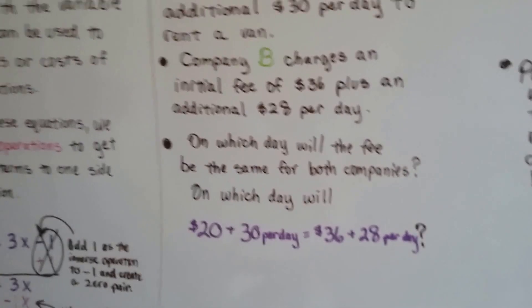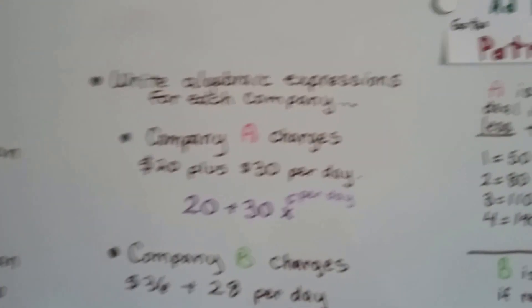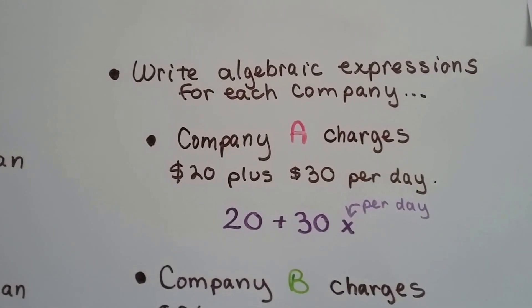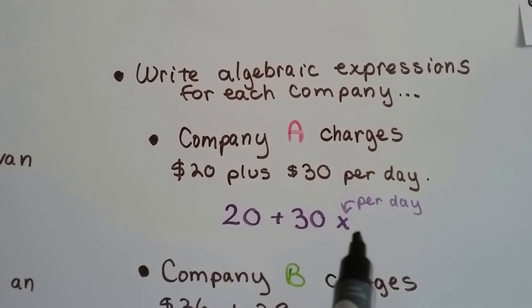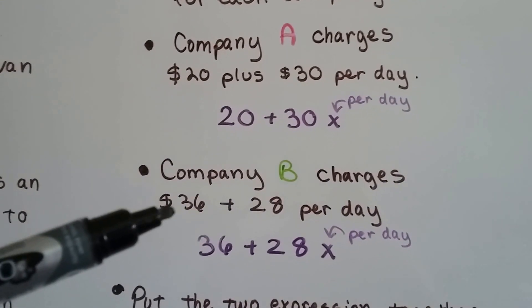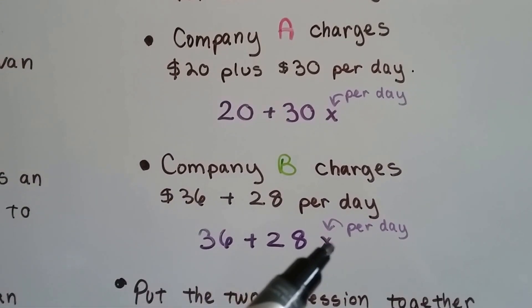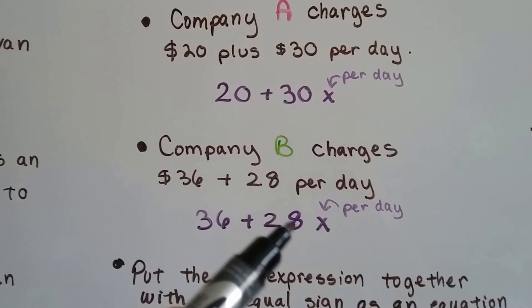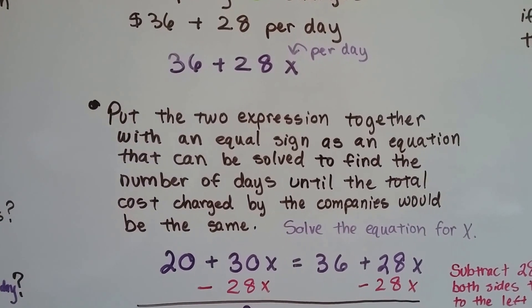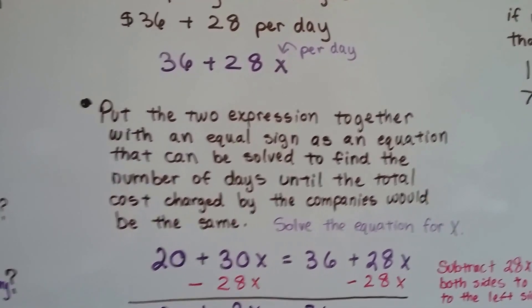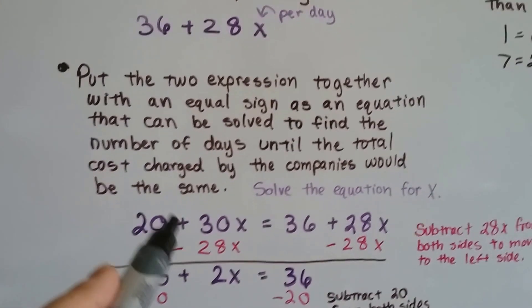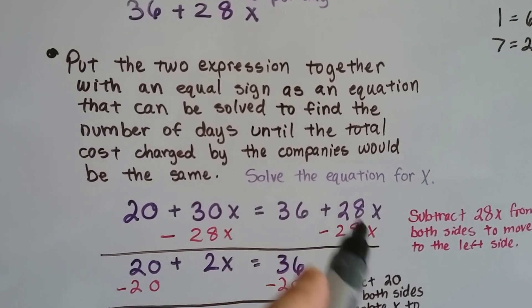On which day will the $20 plus $30 per day be the same as $36 plus $28 per day? So for the per day, we're going to make an x. We can write an algebraic expression for each company. Company A charges $20 plus $30 per day. So x is going to be that per day, and however many days, we just multiply it by 30. Company B charges $36 plus $28 per day. The per day becomes an x. Now we can put the two expressions together with an equal sign as an equation that can be solved to find the number of days until the total cost charged by the companies would be the same.